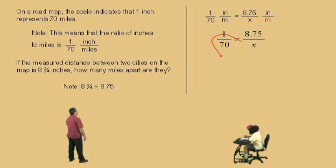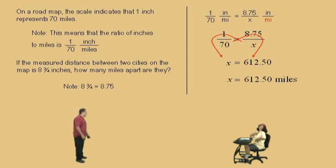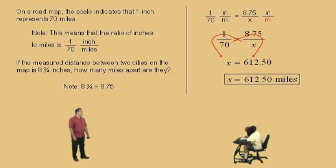Cross multiply. That's right, x times 1 is x, and what's 70 times 8.75? 612.50. Very nice there, Charlie, and so, 612.50 miles, that's how far apart the cities are according to that map.